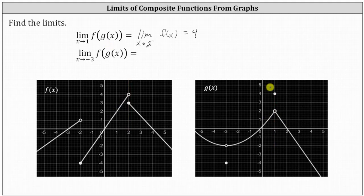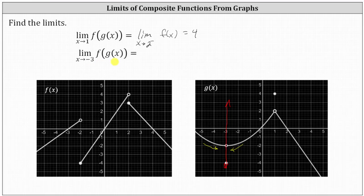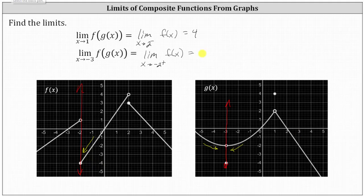For our last example, we have the limit as x approaches negative three of f(g(x)). On the graph of g(x), approaching x equals negative three from the left and right, we approach the y-value of negative two — but from above, meaning from values greater than negative two. This means the limit as x approaches negative three of f(g(x)) equals the limit as x approaches negative two from the positive side of f(x). Analyzing the graph of f(x) and approaching x equals negative two from the right, we approach the y-value of negative four. So the limit as x approaches negative three of f(g(x)) equals negative four.